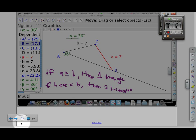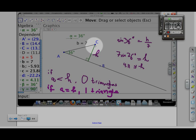So to recap, if A is smaller than H, in other words if it can't even reach this other side, then you're not going to have any triangles. If it reaches that side exactly, then you're going to have one triangle.